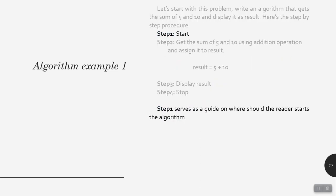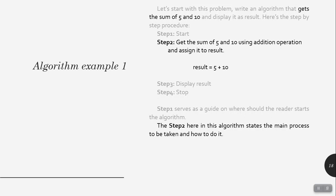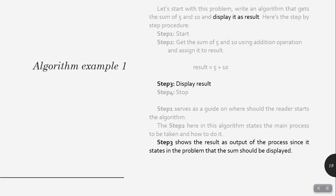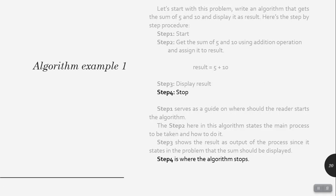In step 1, it serves as a guide on where the reader should start the algorithm. In step 2, since the problem specification says 'gets the sum of 5 and 10,' this step states the main process to be taken and how to do it — get the sum using the addition operation and assign it to 'result.' Result is a variable; we assign the sum of 5 and 10 to it. Step 3 shows the result as the output of the process, since the problem states the sum should be displayed. Step 4 is where the algorithm stops.